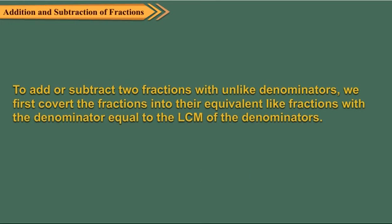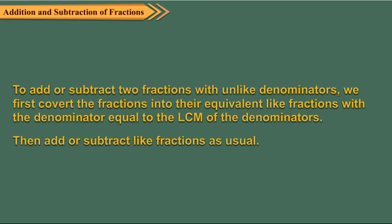To add or subtract two fractions with unlike denominators, we first convert the fractions into their equivalent like fractions, with the denominator equal to the LCM of the denominators. Then add or subtract like fractions as usual.